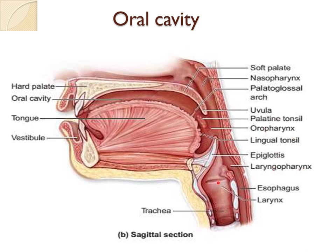The laryngopharynx continues with the larynx and then trachea, which is part of the respiratory system. In the GI tract we have: oral cavity, pharynx, esophagus, stomach, small intestine and large intestine, ending with the anus.